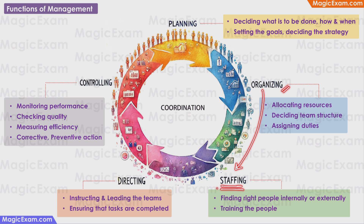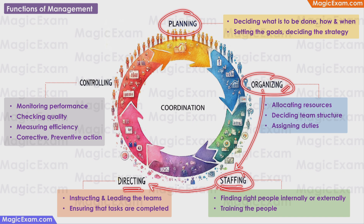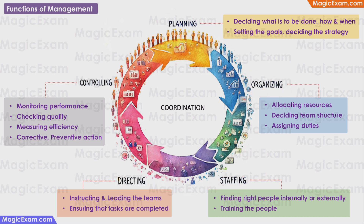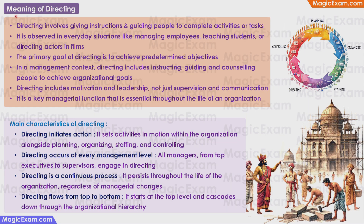After the staffing stage, you now have the plan, you have the resources and you have the people. So now it is time to execute. The next step is directing, where you direct, give instructions and lead the teams to make use of the resources and to work as per the plans to achieve the objectives of the organization. In the directing stage, you ensure that the various tasks or activities assigned to the people in the organization are being completed by them.